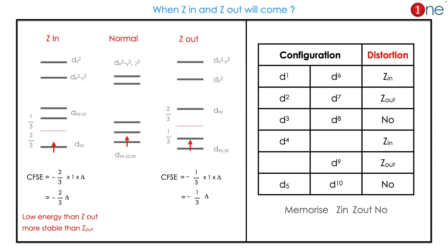Just see configuration and distortion - Z in, Z out, and No. It is easy. You have to memorize: d1, d2, d3, d4 consecutively, similarly d6, d7, d8 to d10. d1 and d6 are Z in; d2 and d7 are Z out; d3 and d8 don't have distortion.